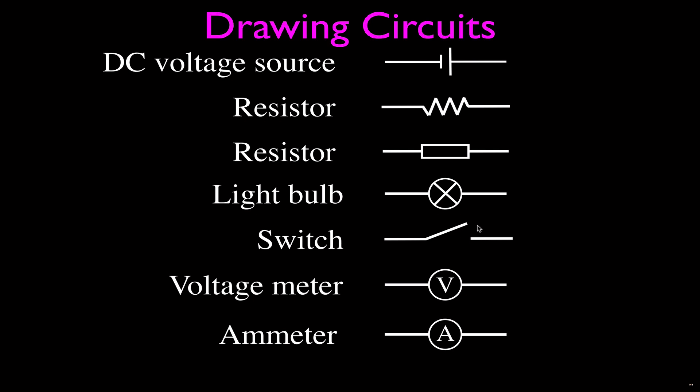Then we have a switch. The switch is often shown open like that, so the current cannot flow through the switch. Then we have two meters. The most common would be a voltmeter, and the same thing common also is the ammeter. This one measures voltage, and this one measures current. So I think those are the ones you'll see most often.